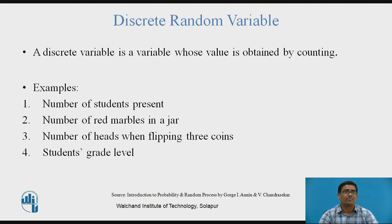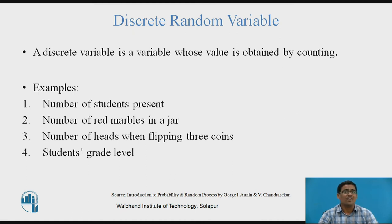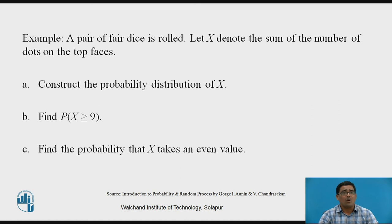A discrete random variable is a variable whose value is obtained by counting. Examples of discrete random variables include: number of students present in a class, number of red marbles in a jar, number of heads when flipping three coins, and a student's grade level. We obtain each of these by counting — that's why they are examples of discrete random variables.